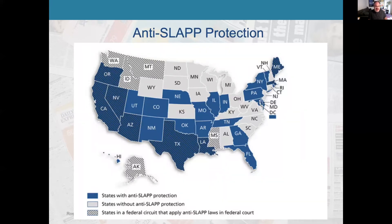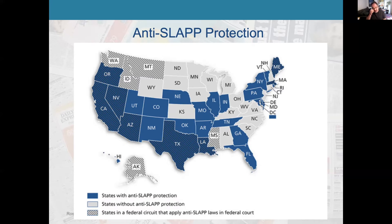A SLAP is what we refer to as when sometimes a corporation will basically use its powerful lawyers to silence a media outlet — bringing a libel case against a newspaper or media outlet simply to shut them up, when there's no merits to the case at all. You just want to threaten someone with powerful lawyers. In 29 states, including the District of Columbia and Guam, there is some type of anti-SLAP protection.